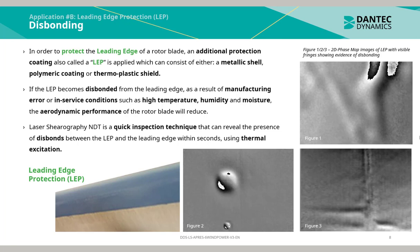Figures 1, 2, and 3 show 2D phase map images of the LEP with visible fringes showing evidence of disbonding.